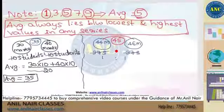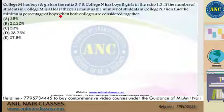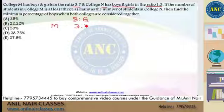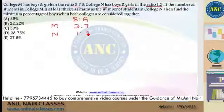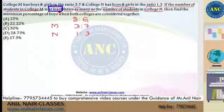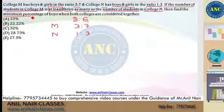I am just taking these two key points before moving on to the original question. College M has boys and girls in the ratio 3 is to 7, and College N has boys and girls in the ratio 1 is to 3. If the number of students in College M is at least 3 times as many as the number of students in College N, find the minimum percentage of boys when both colleges are considered together.